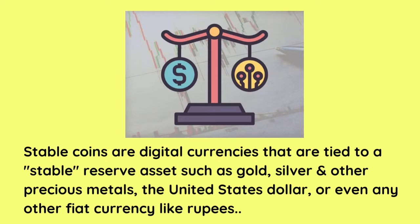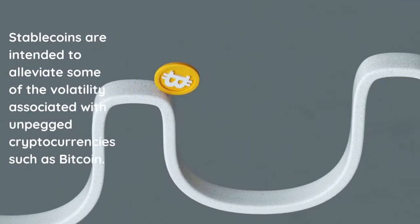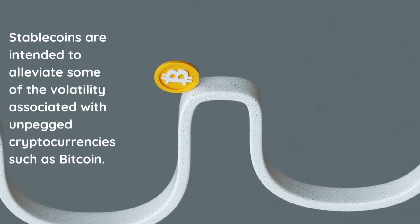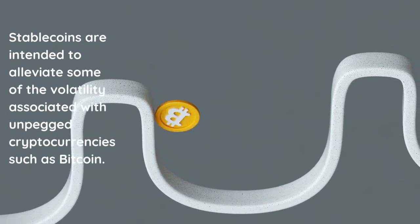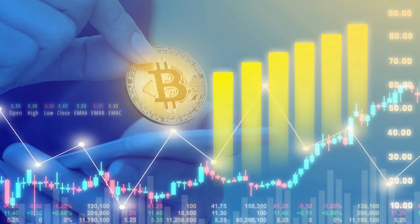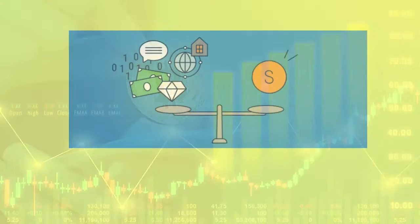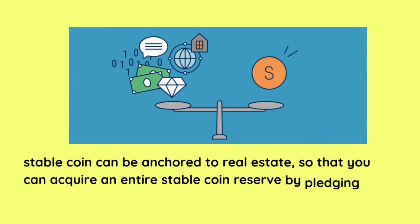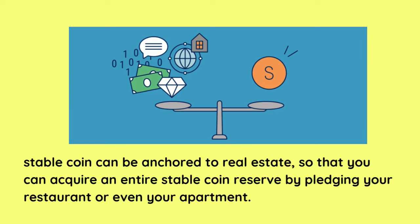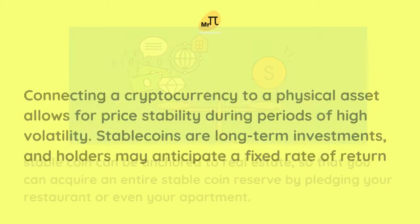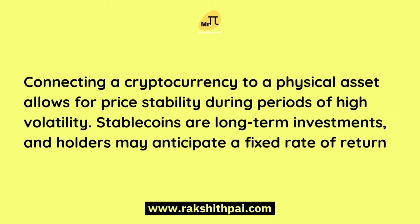Stablecoins are tied to stable reserve assets such as silver and other precious metals, the US dollar, or other fiat currencies like rupees. They are intended to reduce the volatility associated with unpacked cryptocurrencies such as Bitcoin. Additionally, a stablecoin can be anchored to real estate, so you can acquire an entire stablecoin reserve by pledging your property. Connecting cryptocurrency to a fiscal asset allows for price stability during periods of high volatility.